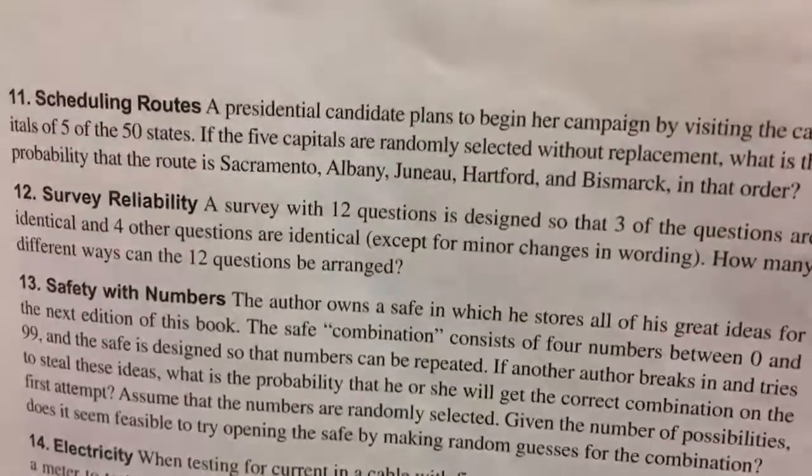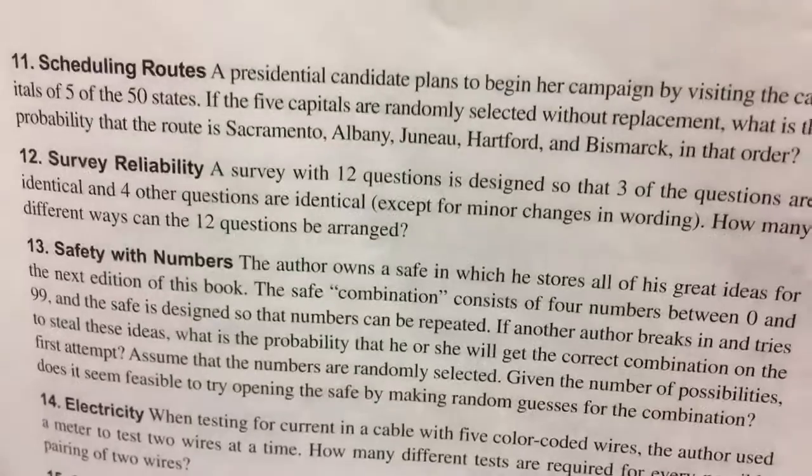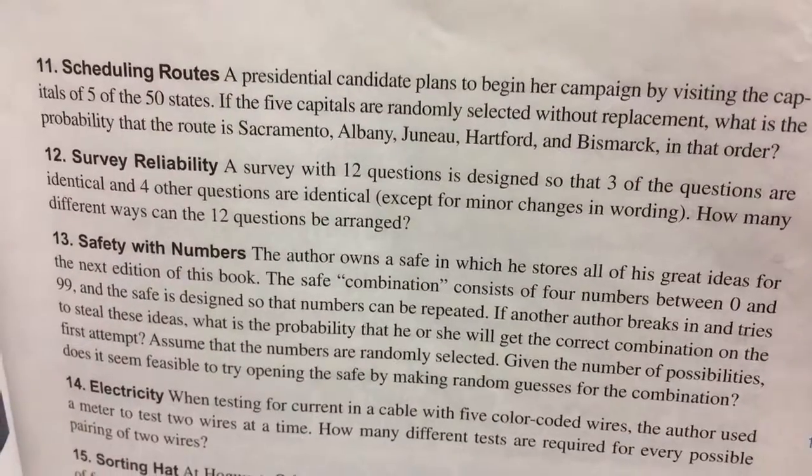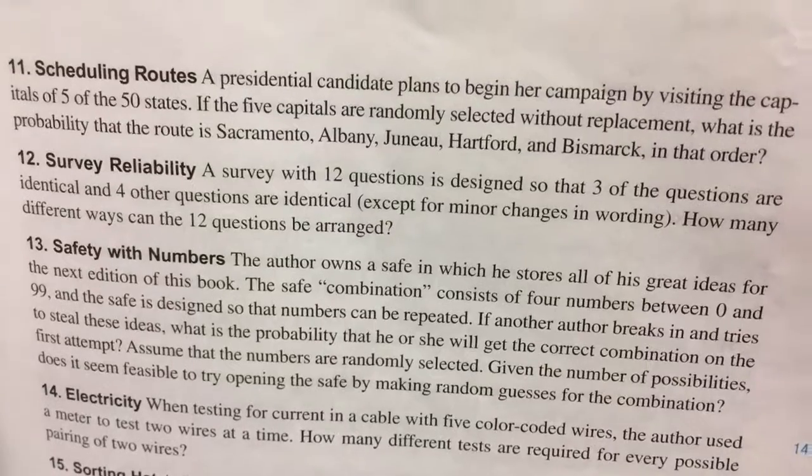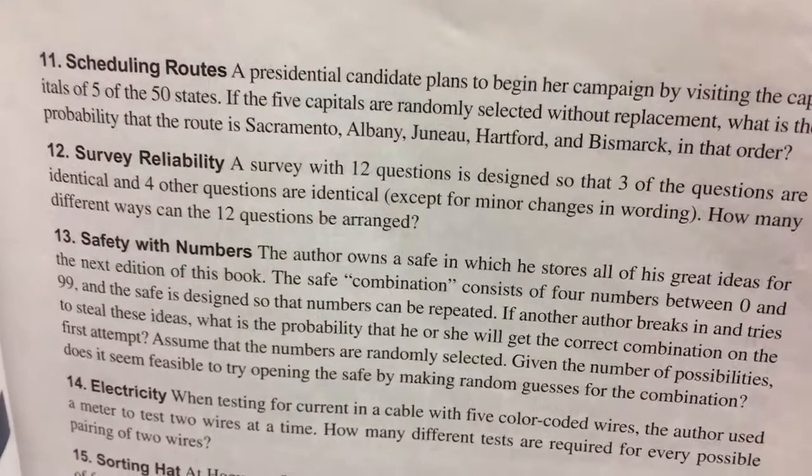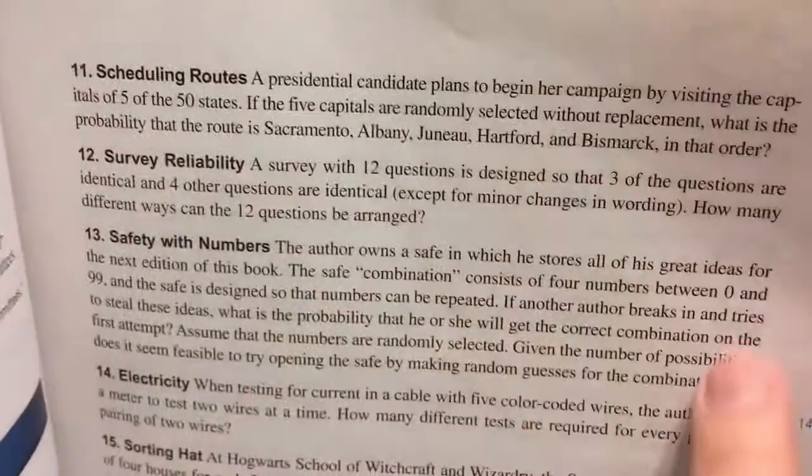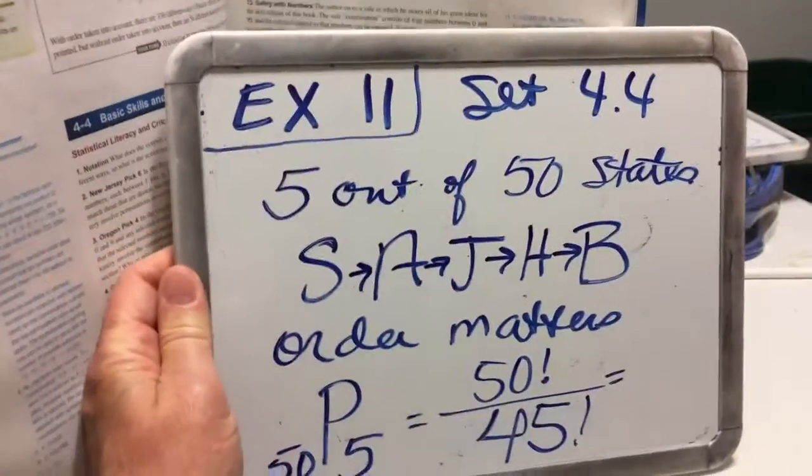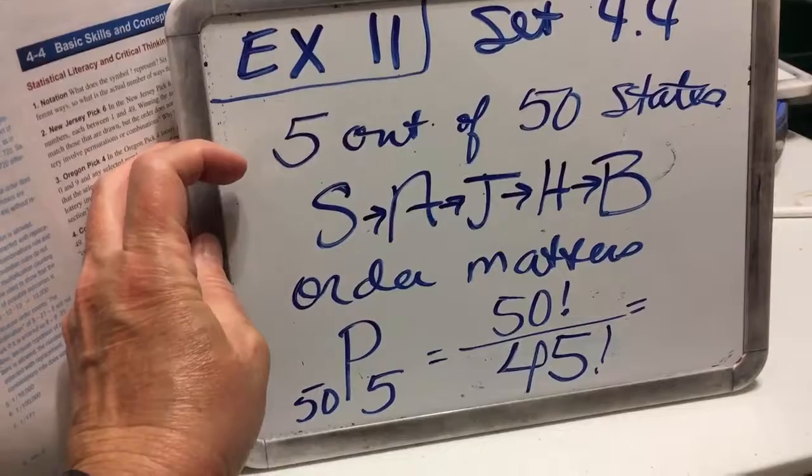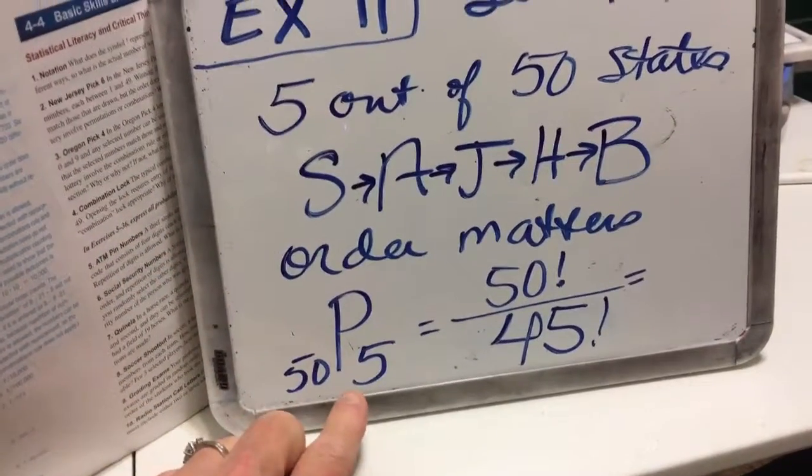The next one we're doing is number 11. A presidential candidate plans to begin her campaign by visiting the capitals of five of the 50 states. If the five capitals are randomly selected without replacement, what is the probability that the route is Sacramento, Albany, Juneau, Hartford, and Bismarck in that order? We have 50 states we're choosing from. We're choosing five capitals, and the order does matter. So we're going to use a permutation of 50 things taken five at a time.